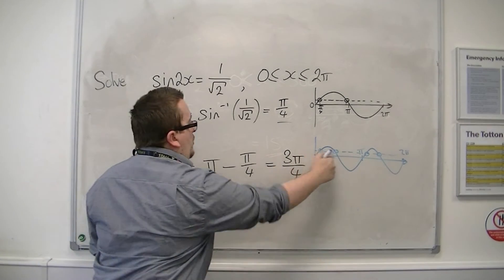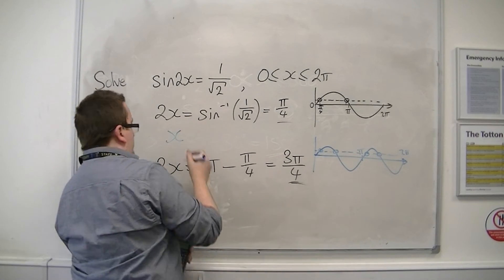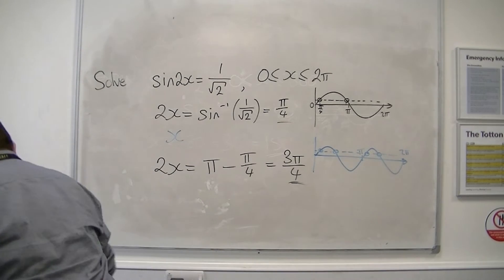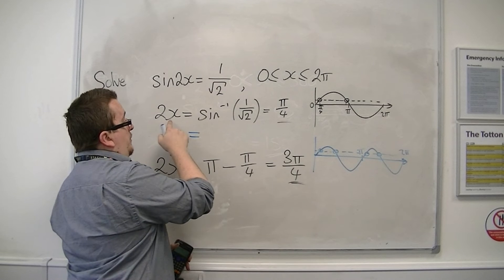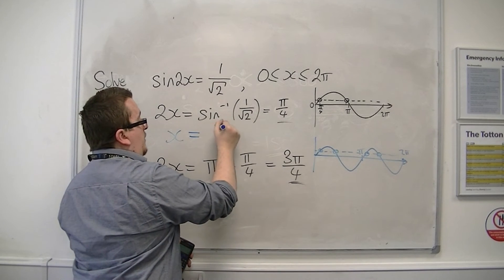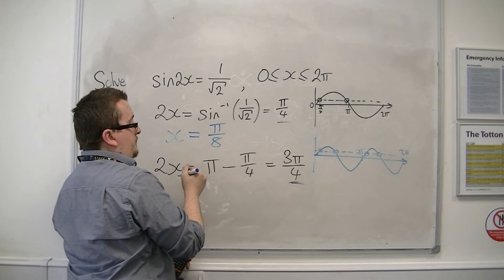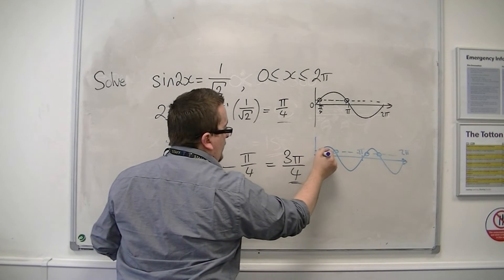And my 1 over root 2 is actually going to give me four solutions. So the first two can be found by dividing through by 2. So 2x equals pi over 4, so x must equal pi over 8. That gives me my first solution.